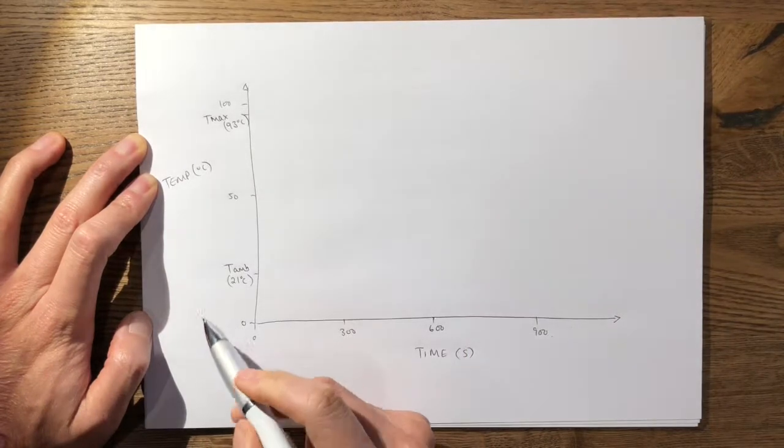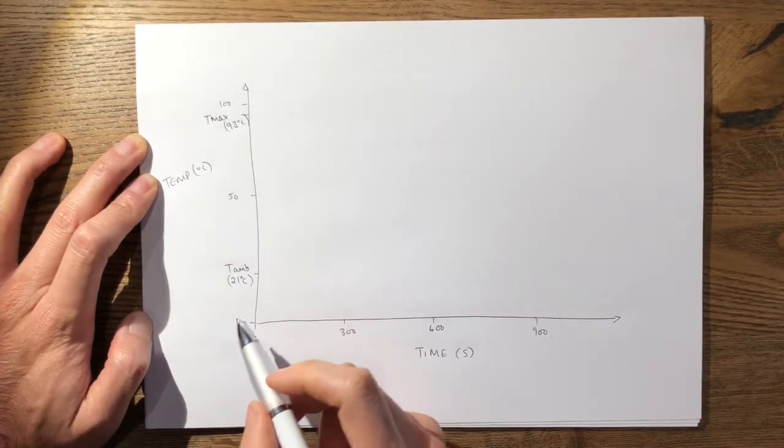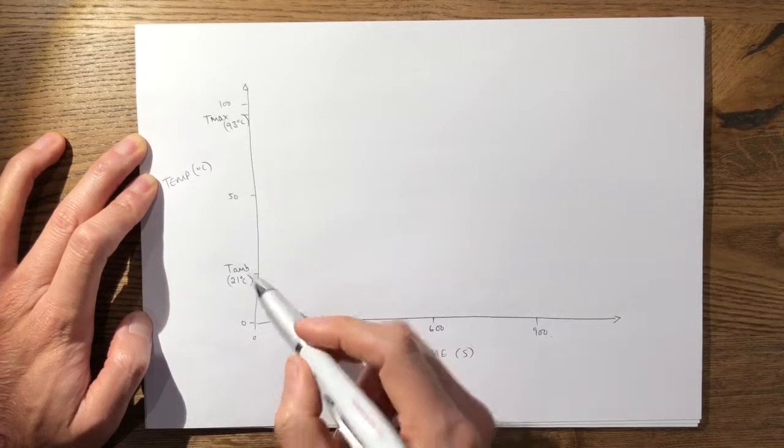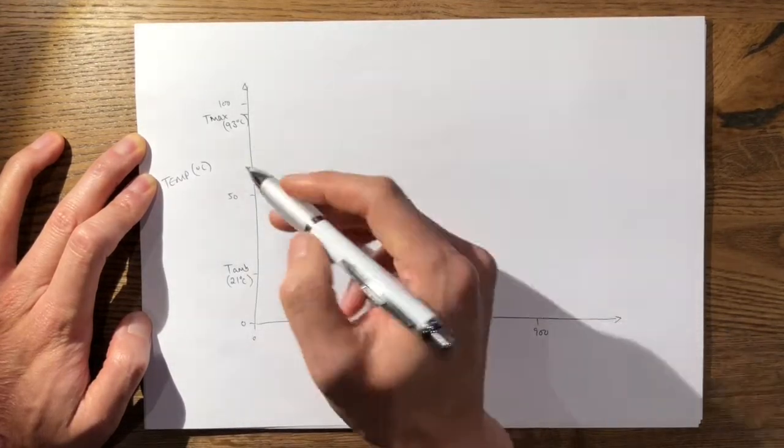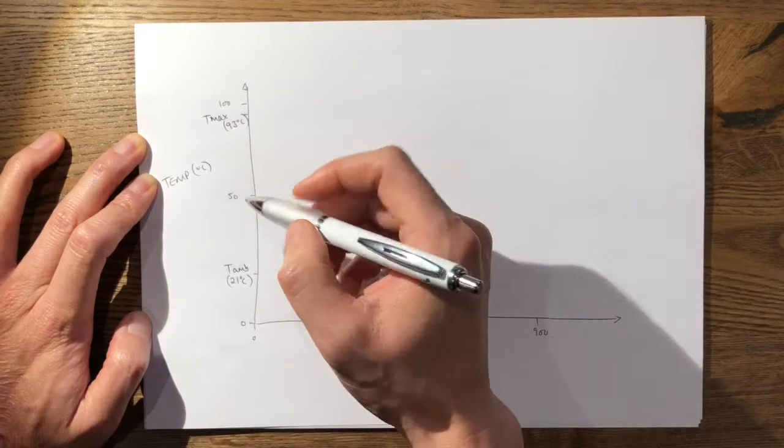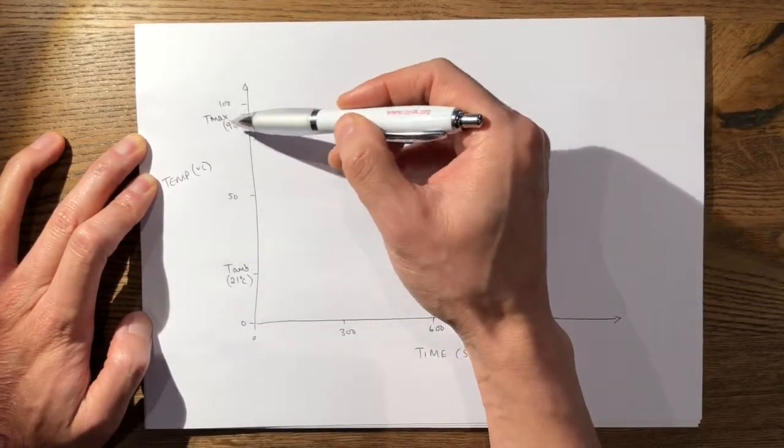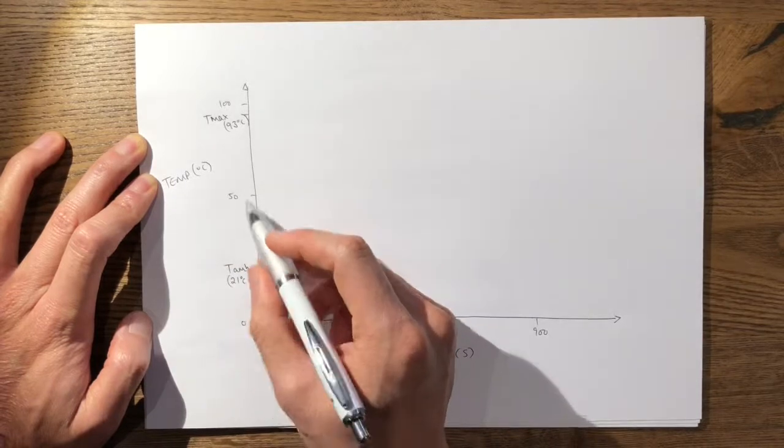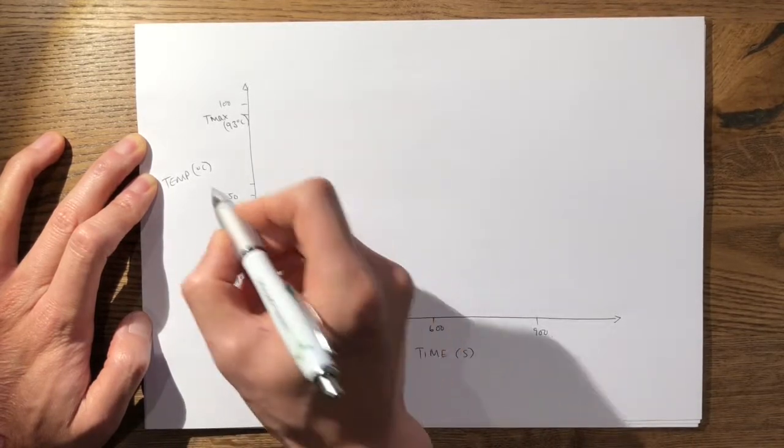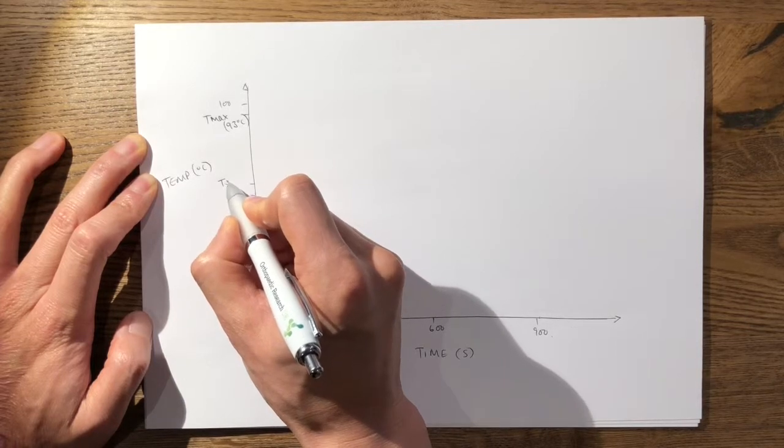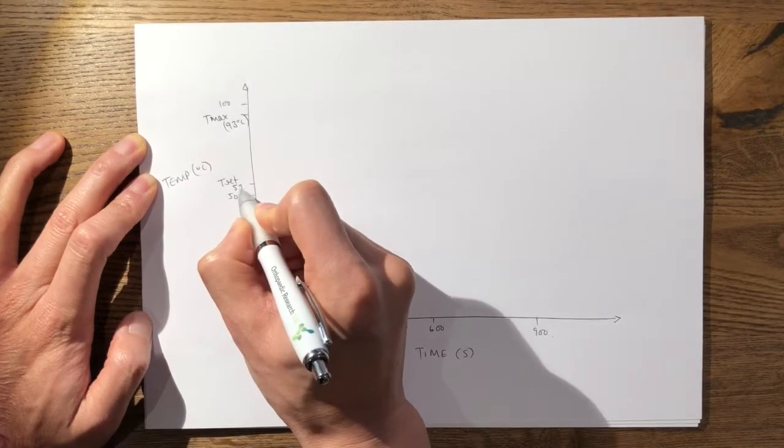T-Max is the maximal temperature that your cement will reach, which is around 93 degrees. Your setting time of your cement is determined by the temperature that your cement reaches, which is half that of your curing. Half of the difference between T-Max and T-Amb would be your setting temperature of your cement, so T-Set would be around 57 degrees.